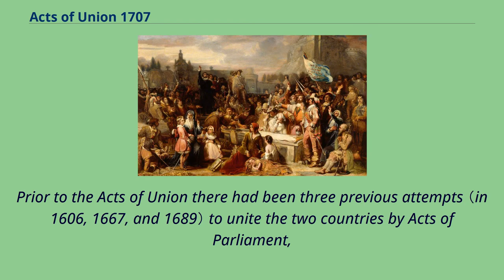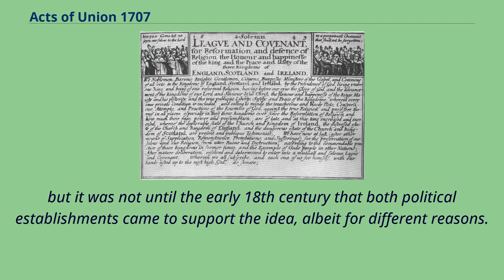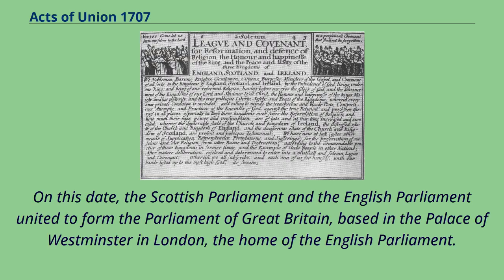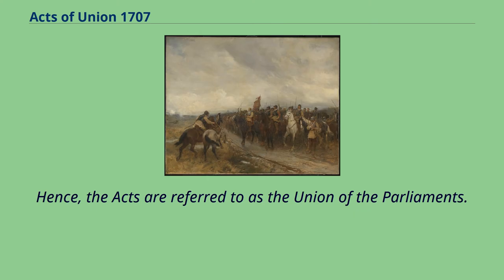Prior to the Acts of Union there had been three previous attempts to unite the two countries by Acts of Parliament, but it was not until the early 18th century that both political establishments came to support the idea, albeit for different reasons. The Acts took effect on May 1, 1707. On this date, the Scottish Parliament and the English Parliament united to form the Parliament of Great Britain, based in the Palace of Westminster in London, the home of the English Parliament. Hence, the Acts are referred to as the Union of the Parliaments.